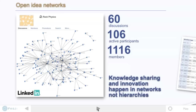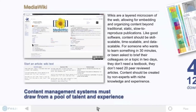We're seeing an emergence of new media tools for collaboration and group effort. Wikis are really great because they allow us to organize content beyond static, slow-to-reproduce publications. Like good software, content should be skill scalable, time scalable, and data scalable.